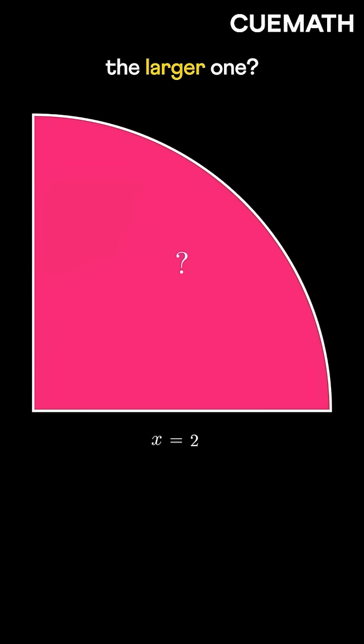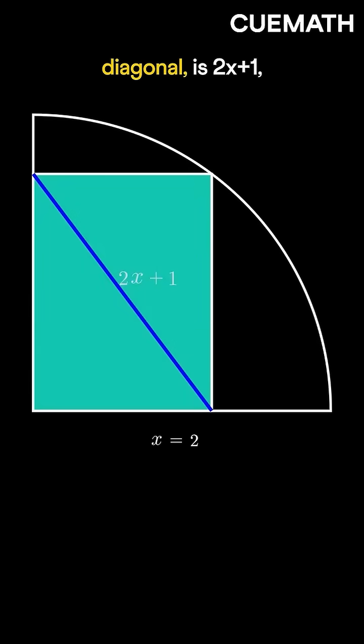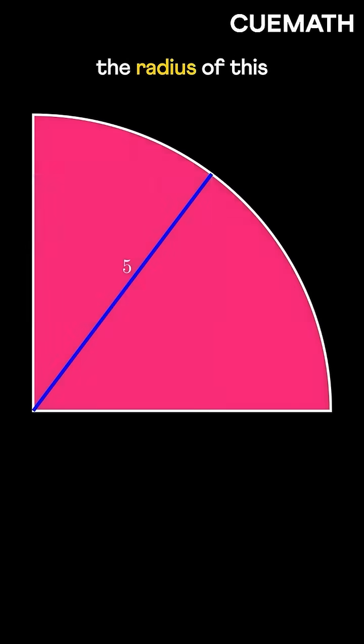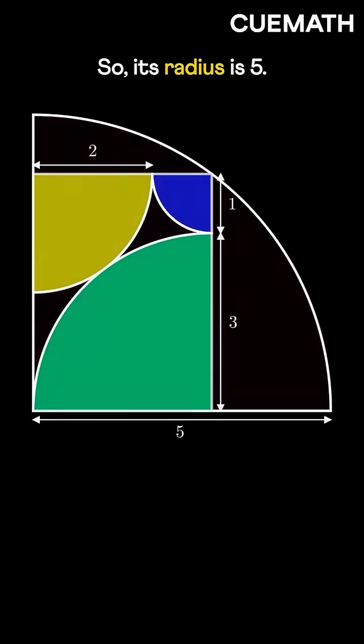What about the larger one? This length, the rectangle's diagonal, is 2x plus 1, or 5. It must be equal to the other diagonal, which is also the radius of this quarter circle. So its radius is 5.